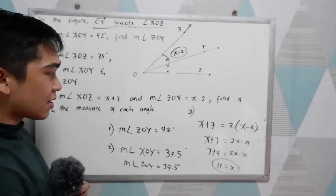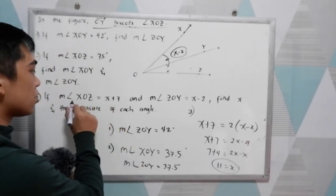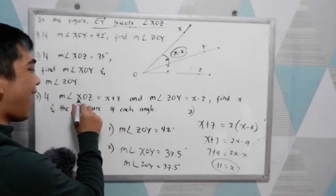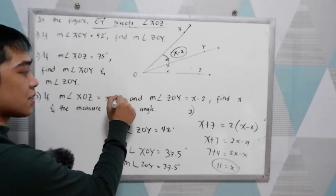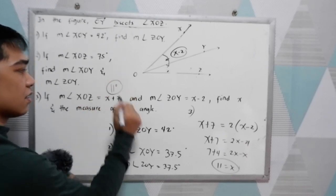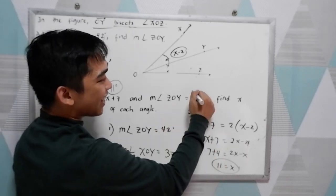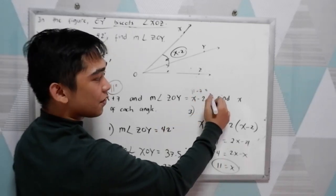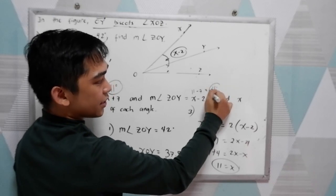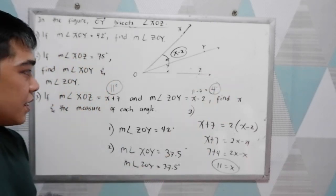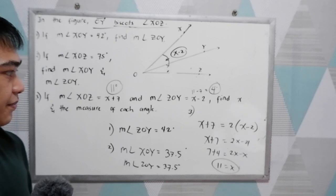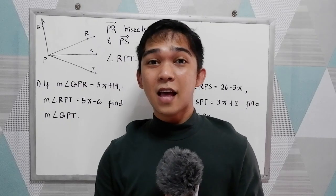Now, since X is 11, just substitute. So the measure of angle XOZ is 11 plus 7, that is 18 degrees. And the measure of angle ZOY is 11 minus 2, that will give us 9 degrees. That would be the answer.